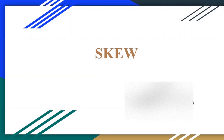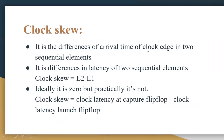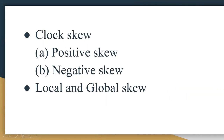Today I would like to discuss about skew. Skew is nothing but the difference of arrival time of two sequential circuits. There are two different types of skew: clock skew, and local and global skew. Clock skew is again classified into two types: positive skew and negative skew.